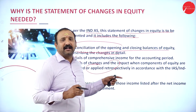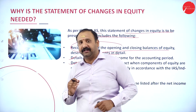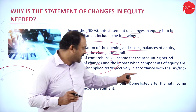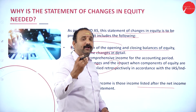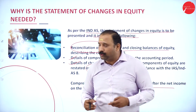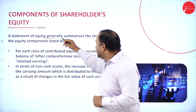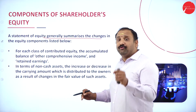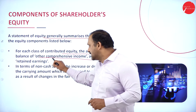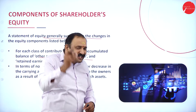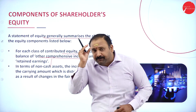Let me take a minute to explain the concept of comprehensive income. Comprehensive income means the income that is obtained and listed after the net income altogether — there are factors that have to be included in terms of net income. Followed by the components of the shareholders' equity: a statement of equity generally summarizes the changes in equity, including for each class of contributed equity the accumulated balance of other comprehensive income and retained earnings.